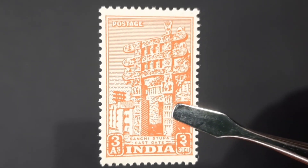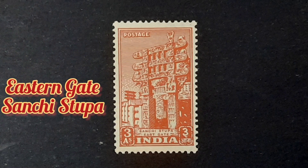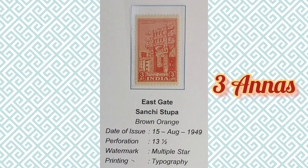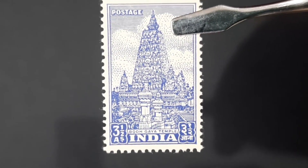The next stamp is the three anna stamp. The image depicted here is the Eastern Gateway of the Sanchi Stupa. The Sanchi Stupa is one of the greatest Buddhist monuments built by Ashoka the Great in the 3rd century BC. The toranas or gateways were later added in the 1st century BC. The philatelic information about this stamp can be found here.